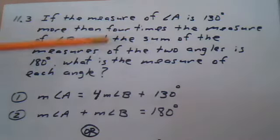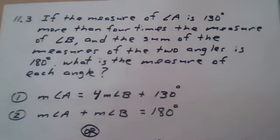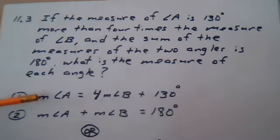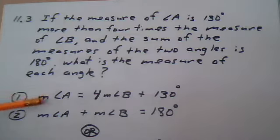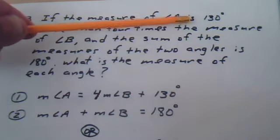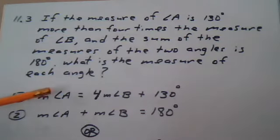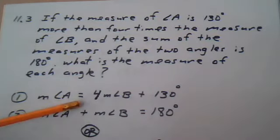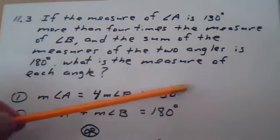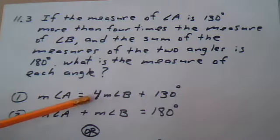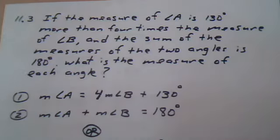So we need to translate these words into symbols. The measure of angle A, so this M stands for measure, the measure of angle A is, is translates into equal. So if the measure of angle A is 130 degrees more than four times the measure of angle B. That's the first three lines.